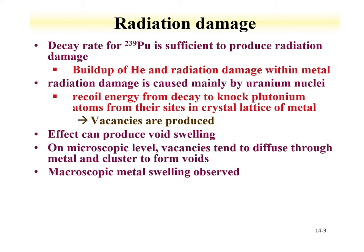We left off previously discussing plutonium metal and its corrosion properties. Plutonium is radioactive, so radiation damage can be induced in plutonium metal. The decay rate of plutonium-239 is sufficient for the production of radiation damage, including the buildup of alpha particles or helium in the material, and radiation damage due to the emission of the alpha particle and the recoil of the uranium daughter. The recoil energy is on the order of keV, which is certainly enough energy to knock atoms off their lattice sites.